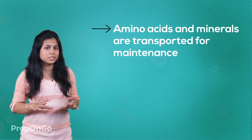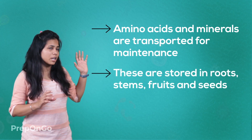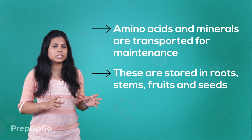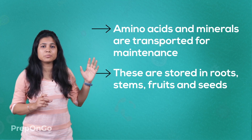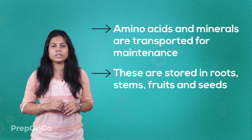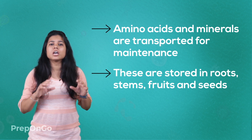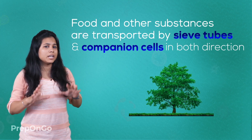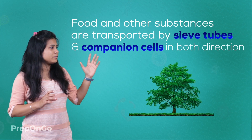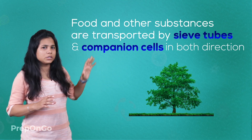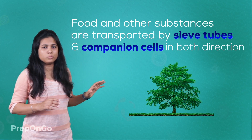These other transported substances help in storage organs such as roots, stems, fruits, seeds, and other growing organs. The translocation of food and other substances works with cells like sieve tubes along with companion cells, in both upward and downward directions.